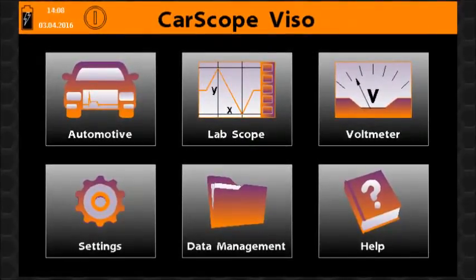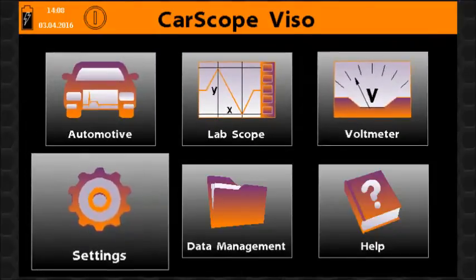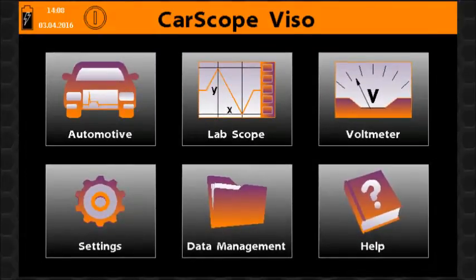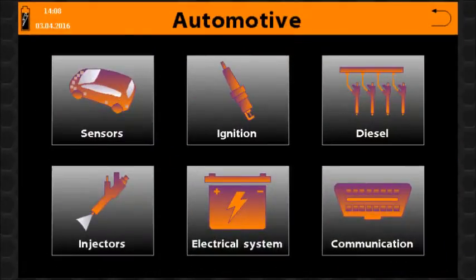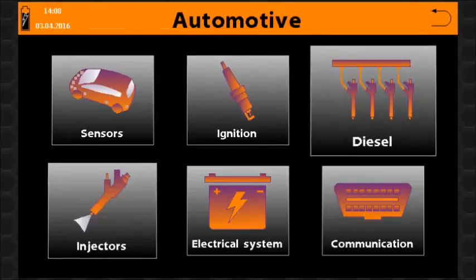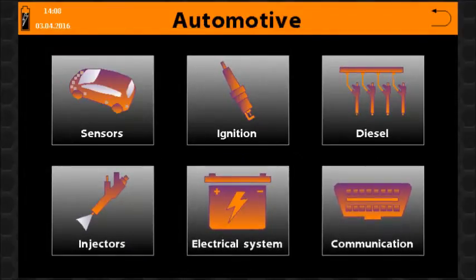The home screen includes function icons, one for each of the primary CarScope Viso functions. The automotive function icon opens a panel that includes function icons with automotive component test operation groups.